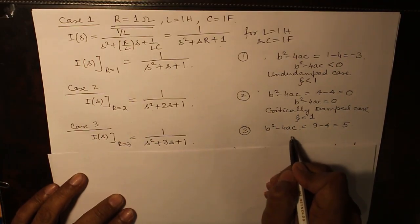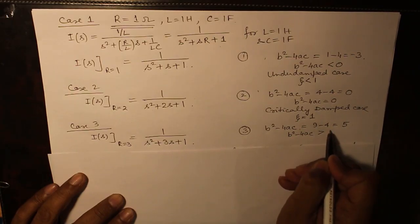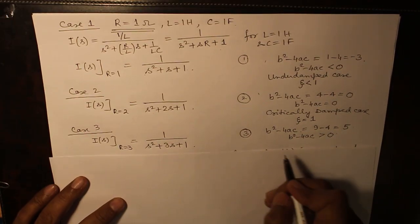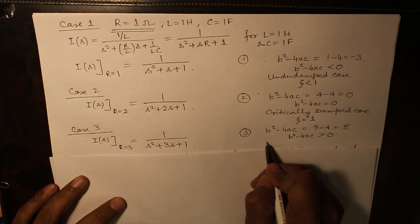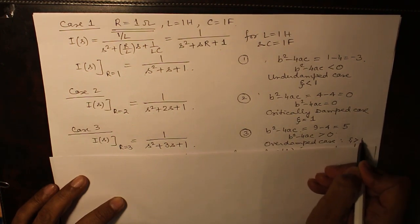And the third one, B² minus 4AC is greater than 0. This is overdamped case and zeta is greater than 1.